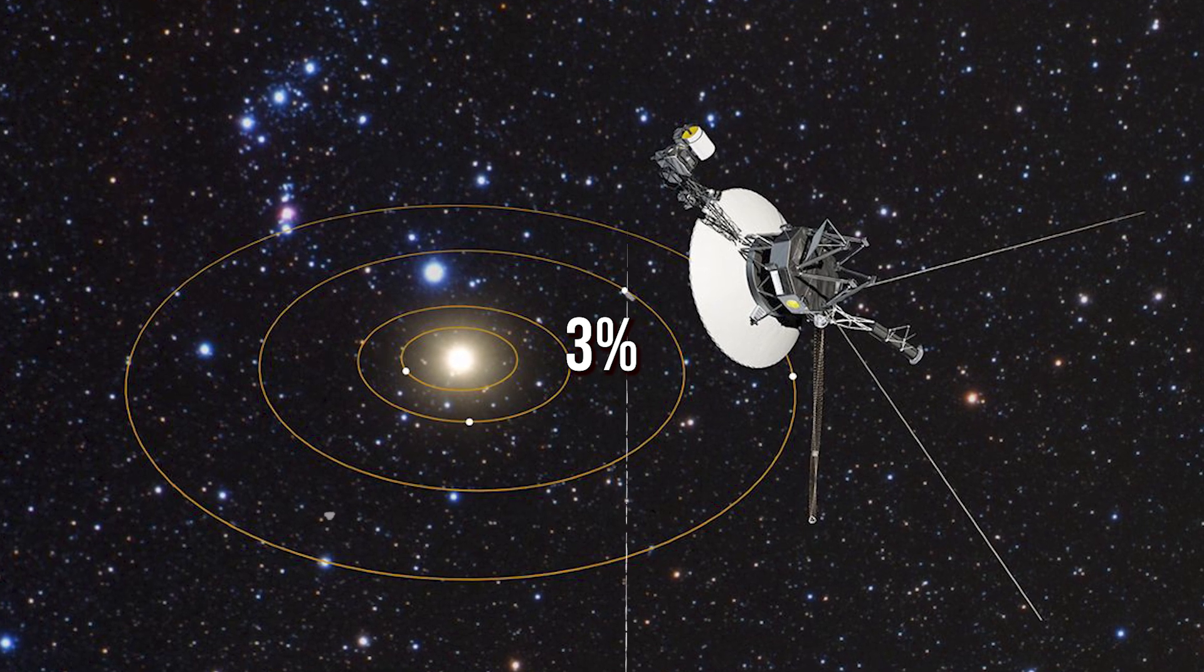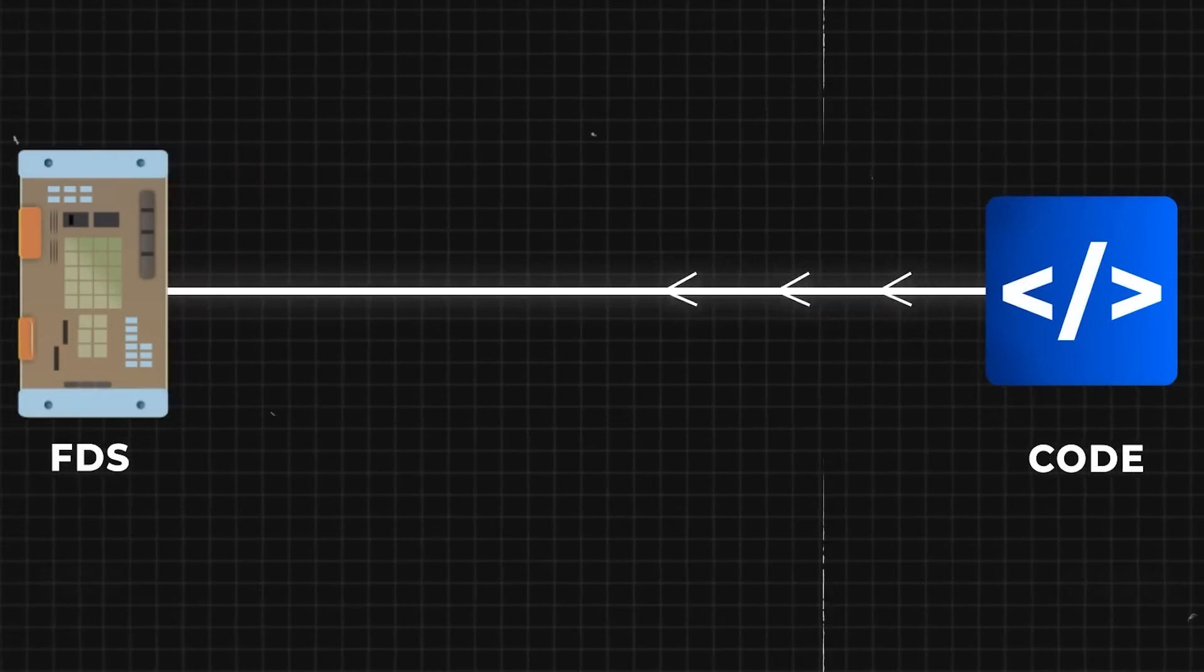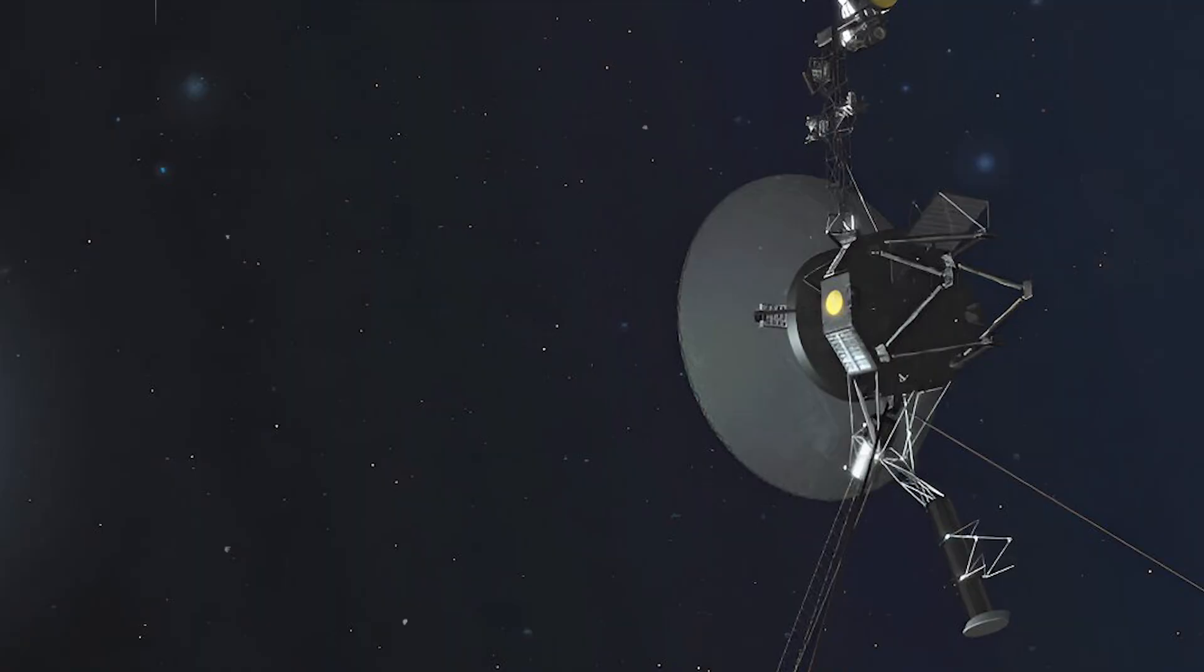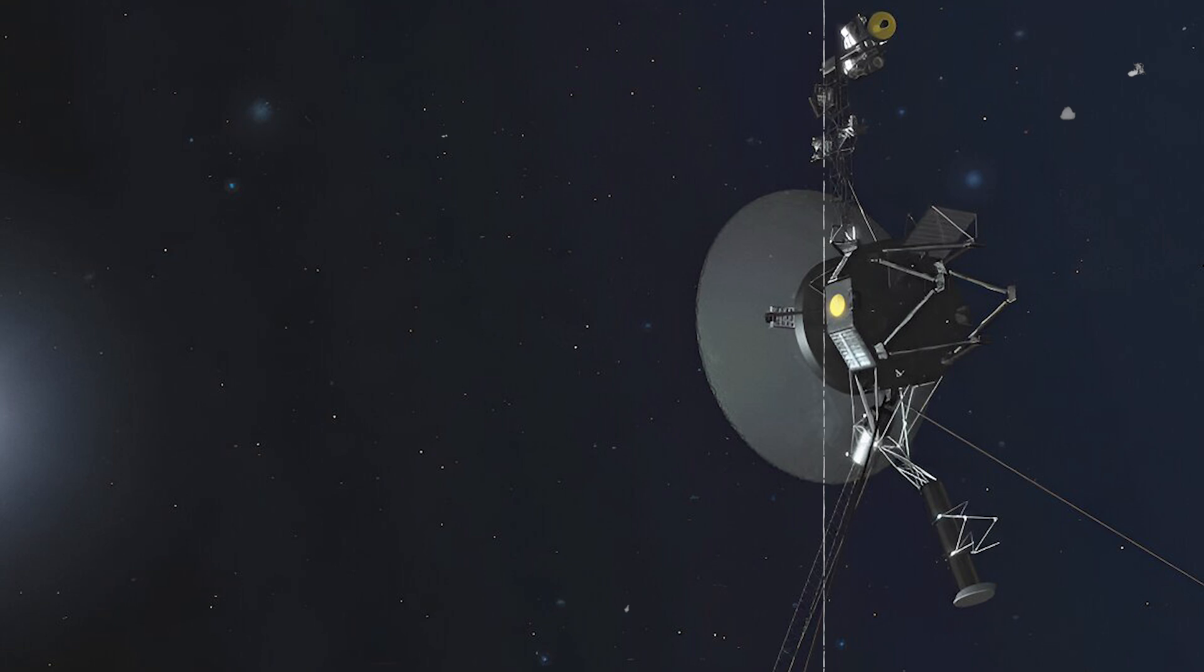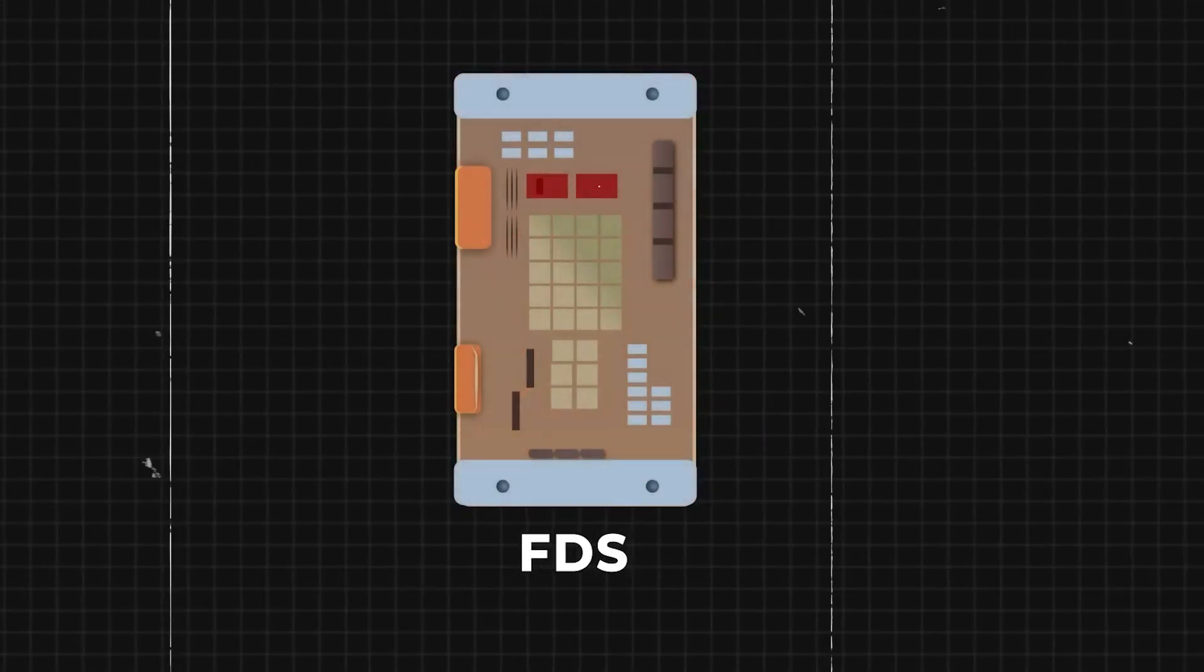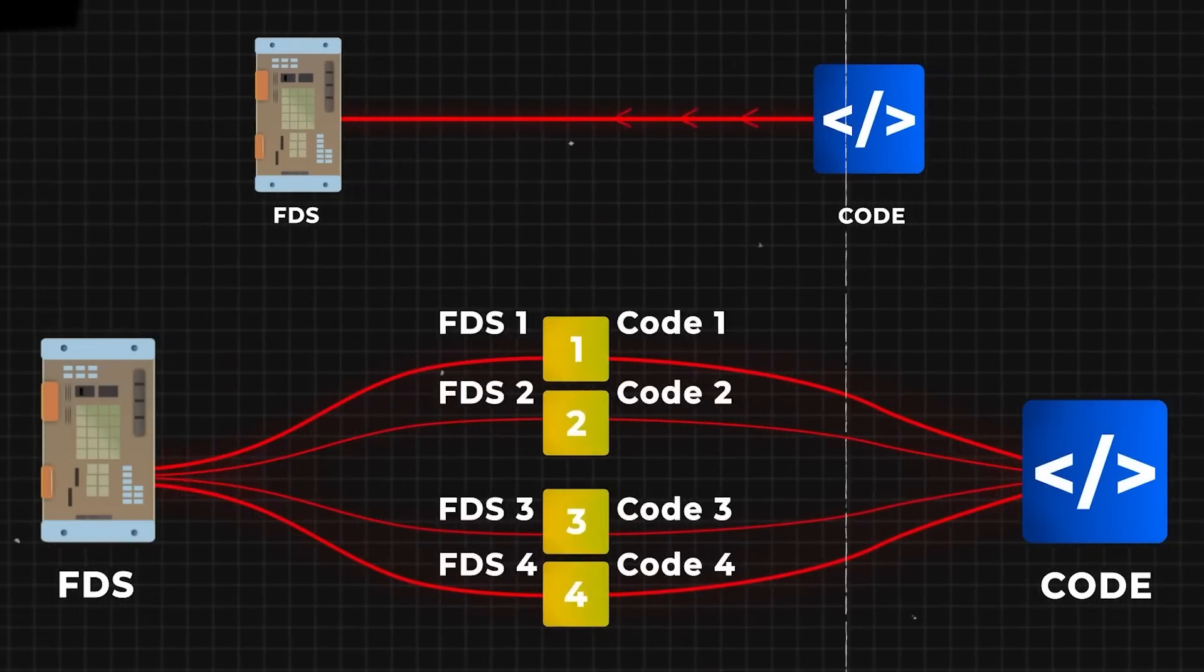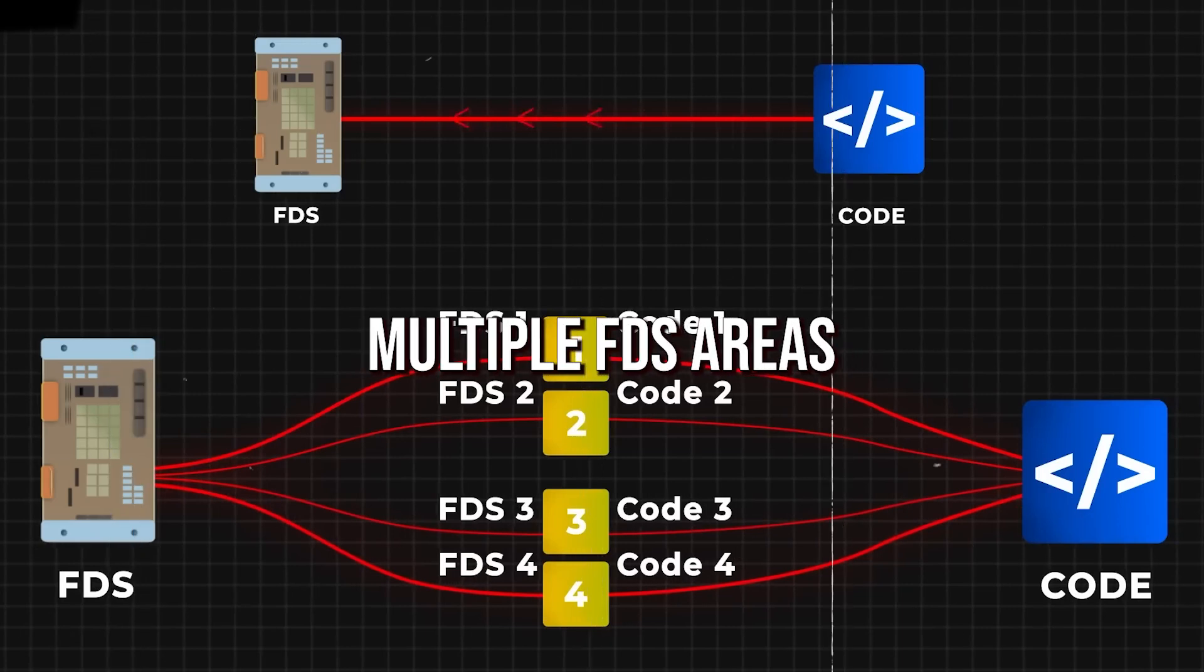Approximately 3% of the computer's memory was corrupted. A chip storing part of the FDS memory, including critical software code, malfunctioned, rendering the on-off strategy ineffective. Now billions of miles away, repairing the chip isn't feasible. Consequently, the team decided to relocate the affected code within FDS memory. However, no single spot could accommodate the entire code section, necessitating division and storage across multiple FDS areas.